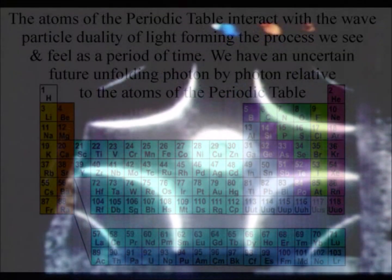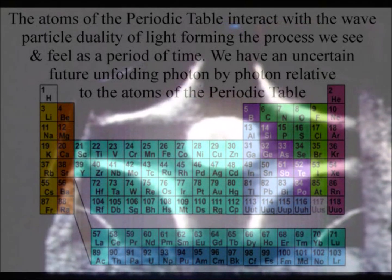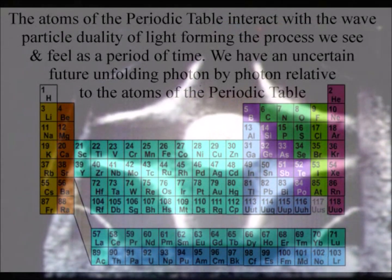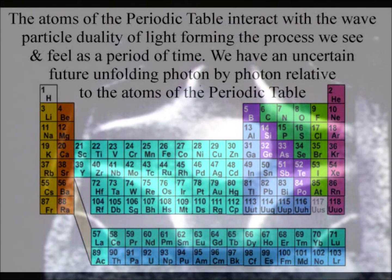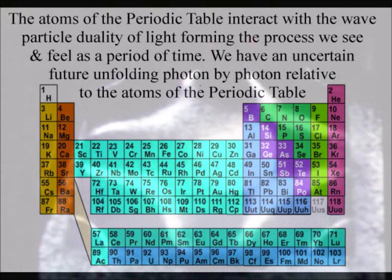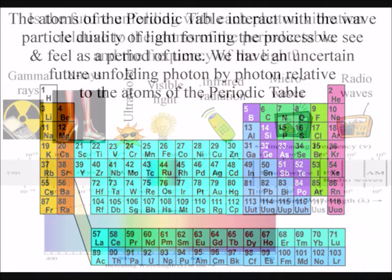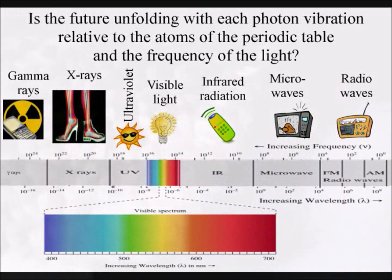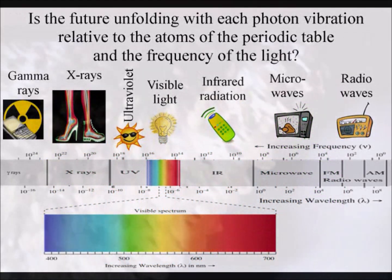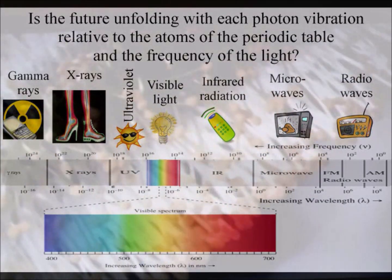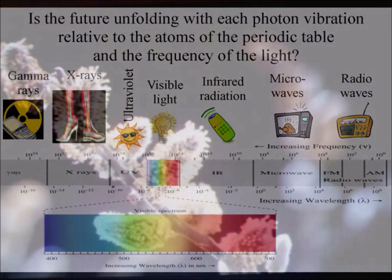In this theory, the universe is a continuum, with new vibrations continuously coming into existence, photon by photon. The future is unfolding relative to the atoms of the periodic table and the frequency of the light. The atoms bond together and interact, vibrating in unison to the frequency of the light.